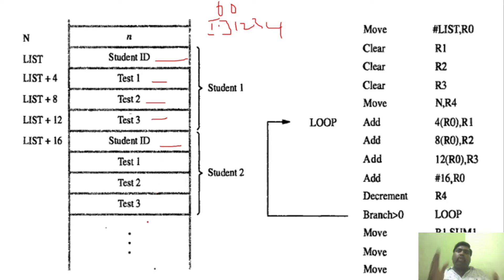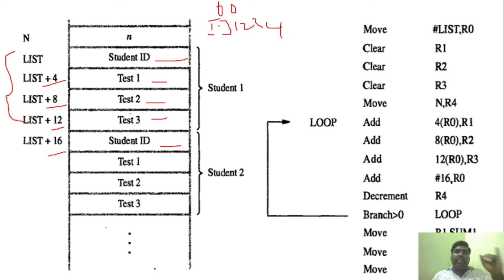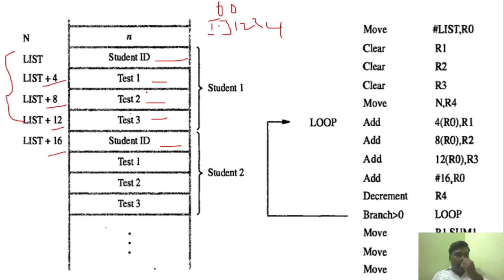If you store the data in a list, the memory locations go: I, I+4, I+8, I+12, I+16. Each student occupies four memory blocks. The first one is the student ID, the second is test 1, the third is test 2, and the fourth is test 3.